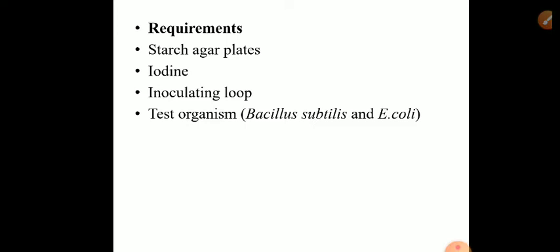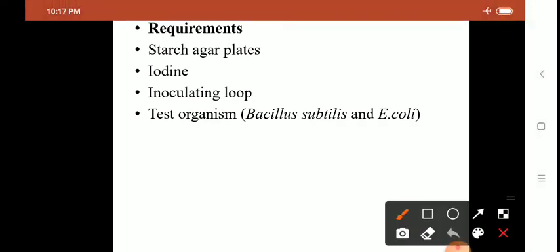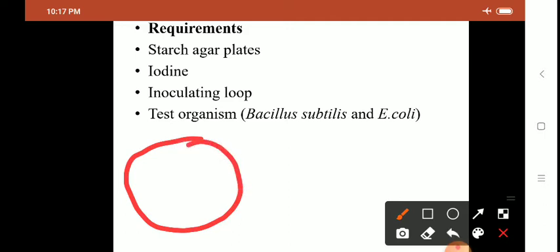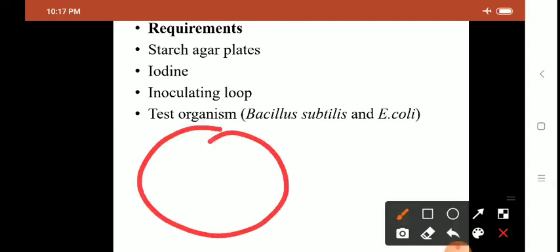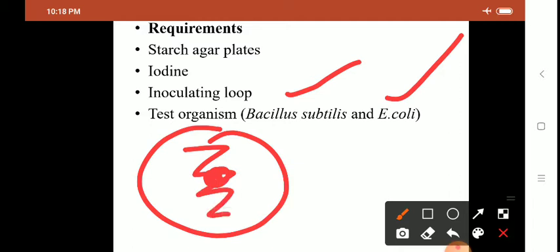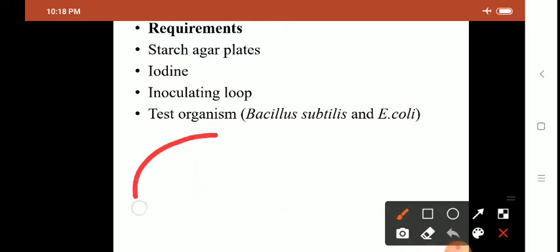So what do you need for the experiment? Starch agar plate, iodine, inoculating loop, and test organisms — Bacillus subtilis and E. coli. You have to prepare starch agar — nutrient agar containing 1% starch — sterilize the medium and pour it into the petri dish. Take the test organism Bacillus subtilis in one plate and E. coli in another plate, or you can inoculate both organisms into one plate. You either spot inoculate with the test organism in the center of the plate or do it in a zigzag streak line manner. Most of the time we spot inoculate the organism.